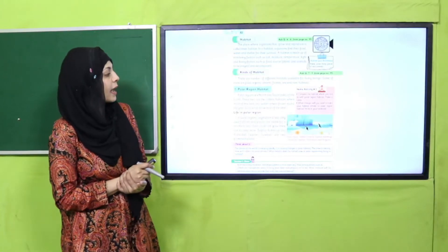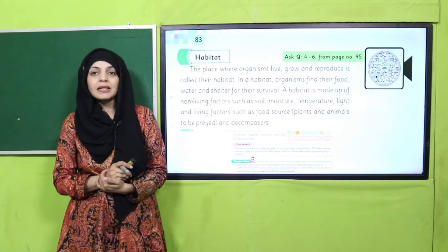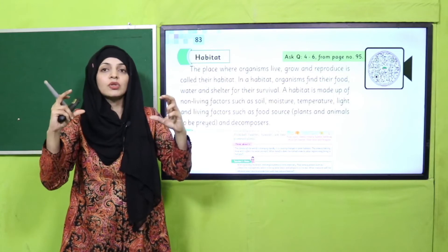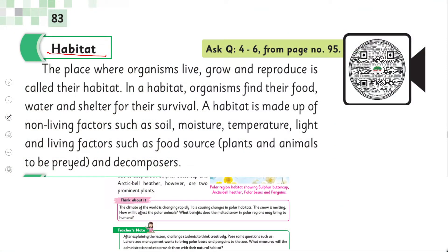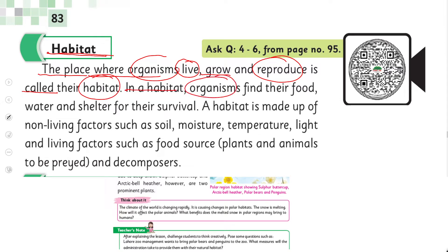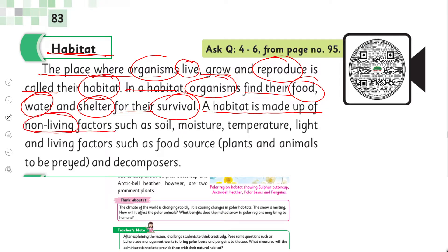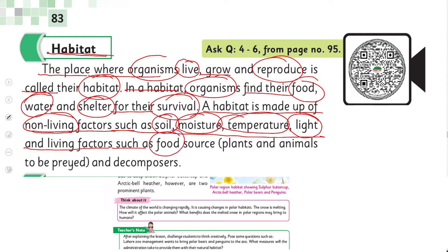Pause the video and open page number 83. Here is page 83 — today we will read about habitat: what is a habitat, why do we use the word habitat, and what does a habitat provide to a living thing. 'Habitat: the place where organisms live, grow, and reproduce is called their habitat. In a habitat, organisms find their food, water, and shelter for their survival.' A habitat is made up of non-living factors such as soil, moisture, temperature, and light.